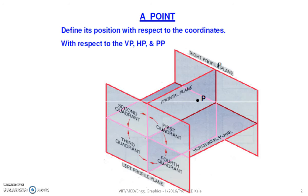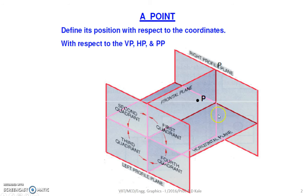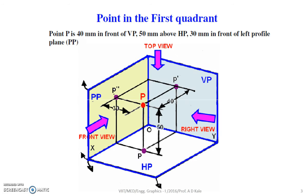We know that space is divided into four different quadrants: first quadrant, second quadrant, third quadrant and fourth quadrant. To get the knowledge of the first quadrant, let us see the position of the horizontal plane as well as the frontal plane, that is the vertical plane, right profile plane and left profile plane. Imagine point P is in the first quadrant and all these planes are transparent.